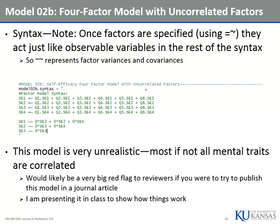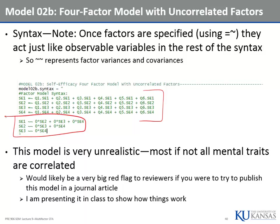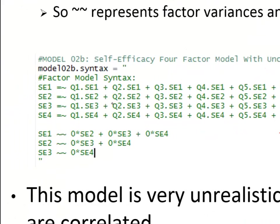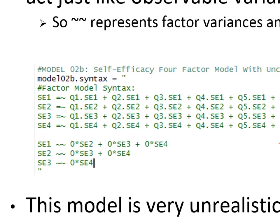We're going to start with the uncorrelated factors. Here's the syntax from before — remember when I said to estimate this model with correlations all equal to zero? We use that syntax here. Once you define a factor in lavaan with the equal tilde, it acts like a variable in the analysis. So if we want to set the correlation between q1.se1 and q1.se2 equal to zero, we use the double tilde syntax and put a zero star in front of the second variable.